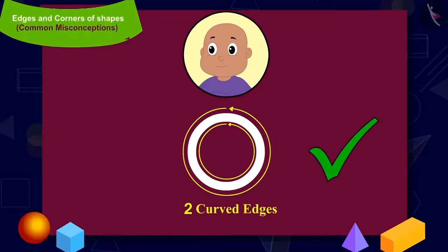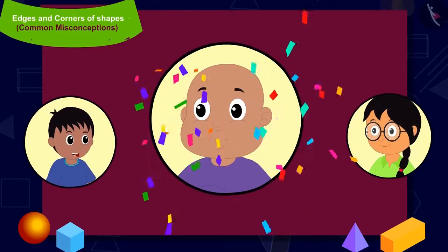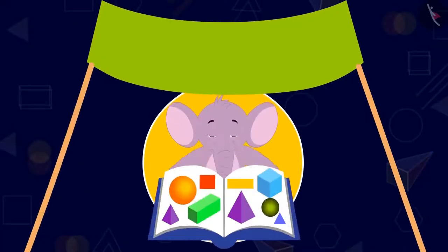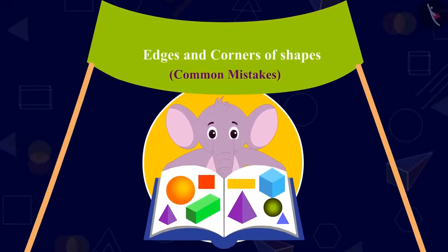So Babloo's shape is absolutely correct — Babloo has won the game! Children, in this lesson we saw some common mistakes related to the edges and corners of shapes.